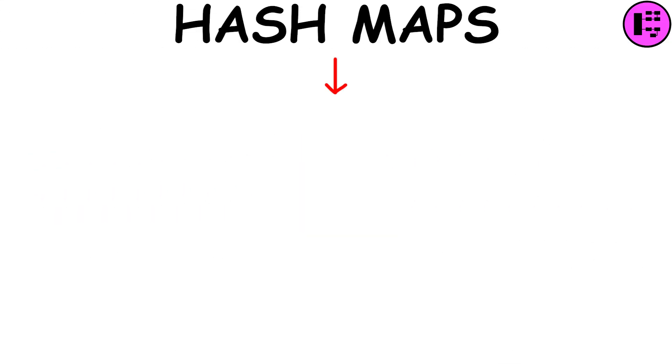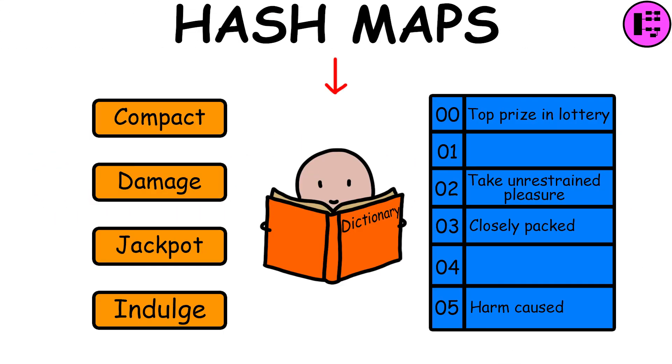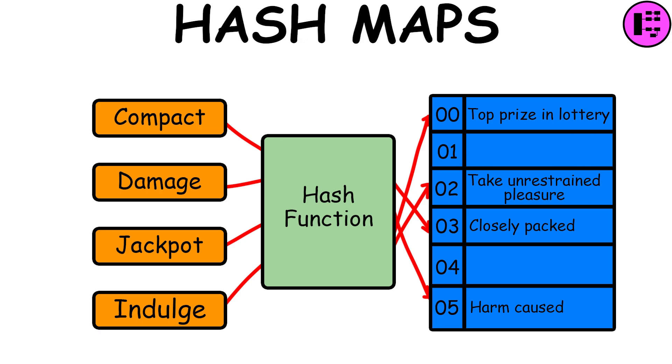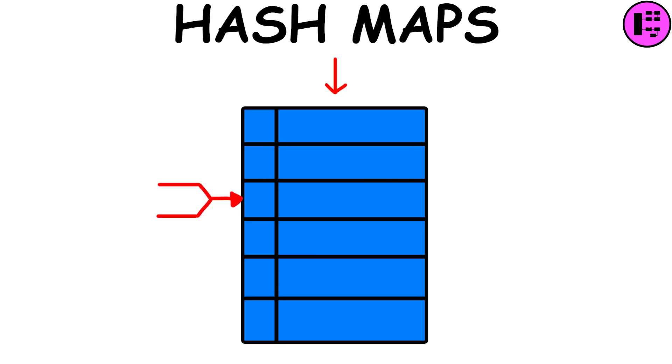Hash maps are like dictionaries where you have pairs of words and their meanings. They work by using a special function to find the place where each word is stored. Sometimes two words might go to the same place. When this happens, it's called a collision. One way to deal with collisions is to make a list at that place to store both words.